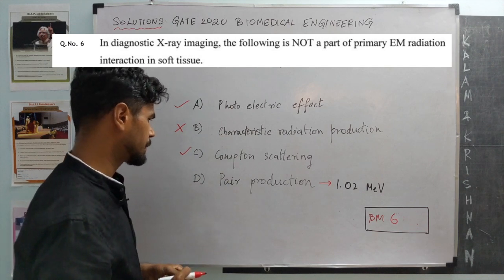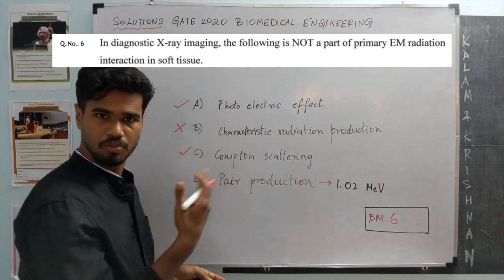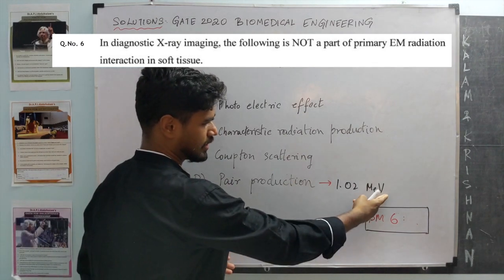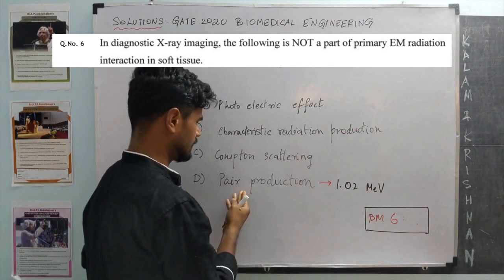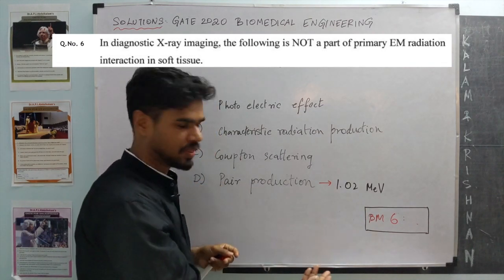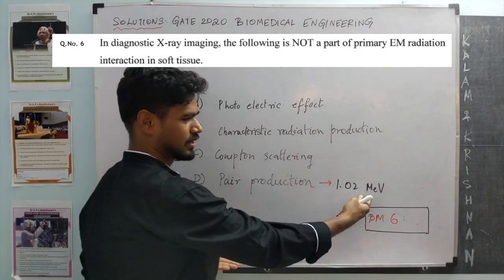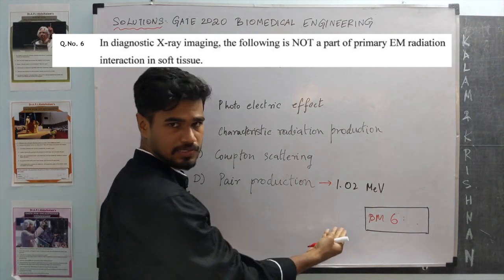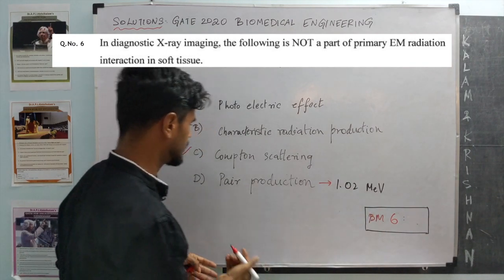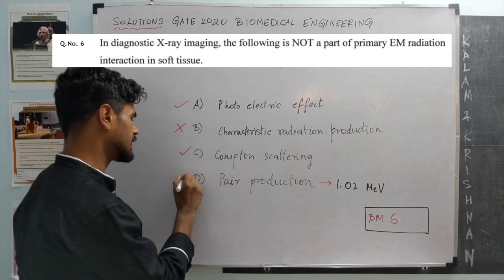This does not happen in soft tissue for sure. As far as pair production is concerned, most x-ray emissions operate at a lesser energy. We need at least 1.02 million electron volts of energy for pair production to occur, but many x-ray machines are rated much less than this — say around 150 kilo electron volts. Because of that, while pair production is possible, it is not likely.